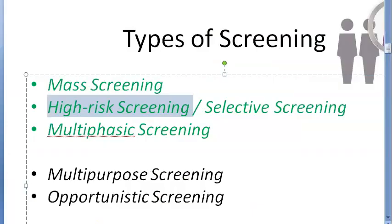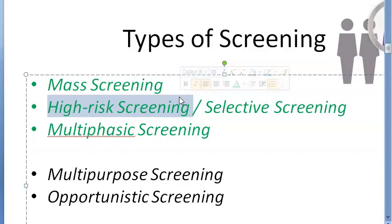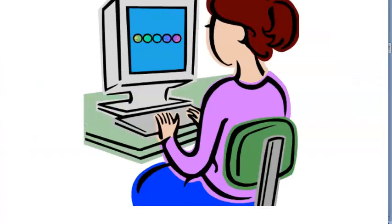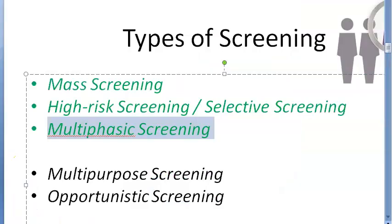High-risk screening is selective to high-risk groups — based on age, socioeconomic status, or risk factors. For example, if people have a smoking history, you can check them for lung cancer. You can check an alcoholic for liver cirrhosis. Those are high-risk screenings. Whoever has elevated serum cholesterol, you can check them for coronary heart disease. Why check everybody for coronary heart disease? Just do a cholesterol check — if they have high cholesterol, then check them for coronary heart disease.